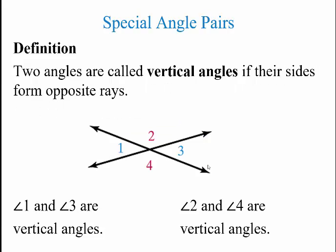Two angles are called vertical angles if their sides form opposite rays. For example, angles 1 and 3 are vertical angles — angle 1 is on top of this line, and angle 3 is on the bottom. Same thing with angles 2 and 4. These are vertical angles because the rays from each side form opposite rays — a ray from here and here form a line, with 2 on top and 4 on the bottom.